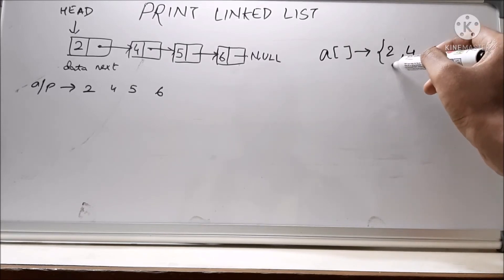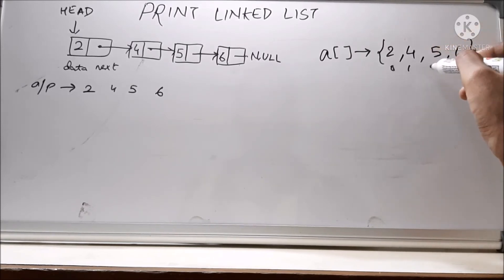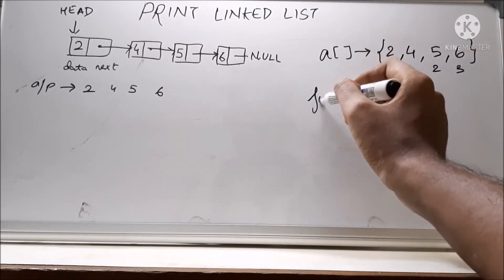We know the index location of the first element is 0, this is 1, this is 2 and this is 3. So we will be using a for loop, right?